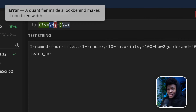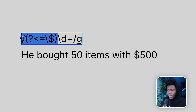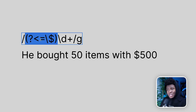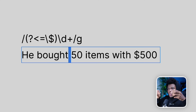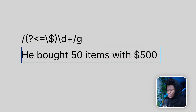Let me explain. Coming back to our previous example with 'he bought 50 items with $500' — when it comes to look-behind, you have to tell the regex engine how many characters to move back. The engine first looks for the digit pattern, finds 50, then checks if 50 is preceded by the look-behind pattern. Since the escaped dollar sign is just one character, the engine goes back one position and checks: is this a dollar sign? It is not, so 50 is not a valid match. It keeps going until it finds 500, goes back one position, checks if it's a dollar sign — it is, so 500 is a valid match.